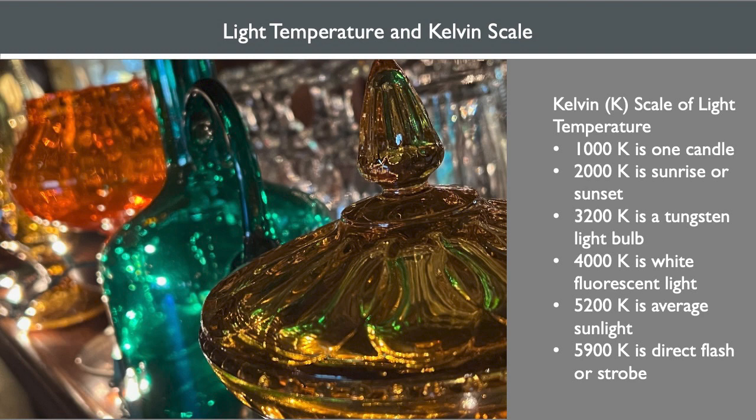Kelvin represents the temperature of light directly correlated with the color of light. 1 Kelvin is equal to 1 degree Celsius. To simplify how this applies to photography, think of it in terms of the temperature of your light source. When the sun is at sunrise or sunset, this appears as approximately 2,000 on the Kelvin scale. A tungsten light bulb is 3,200 Kelvin.